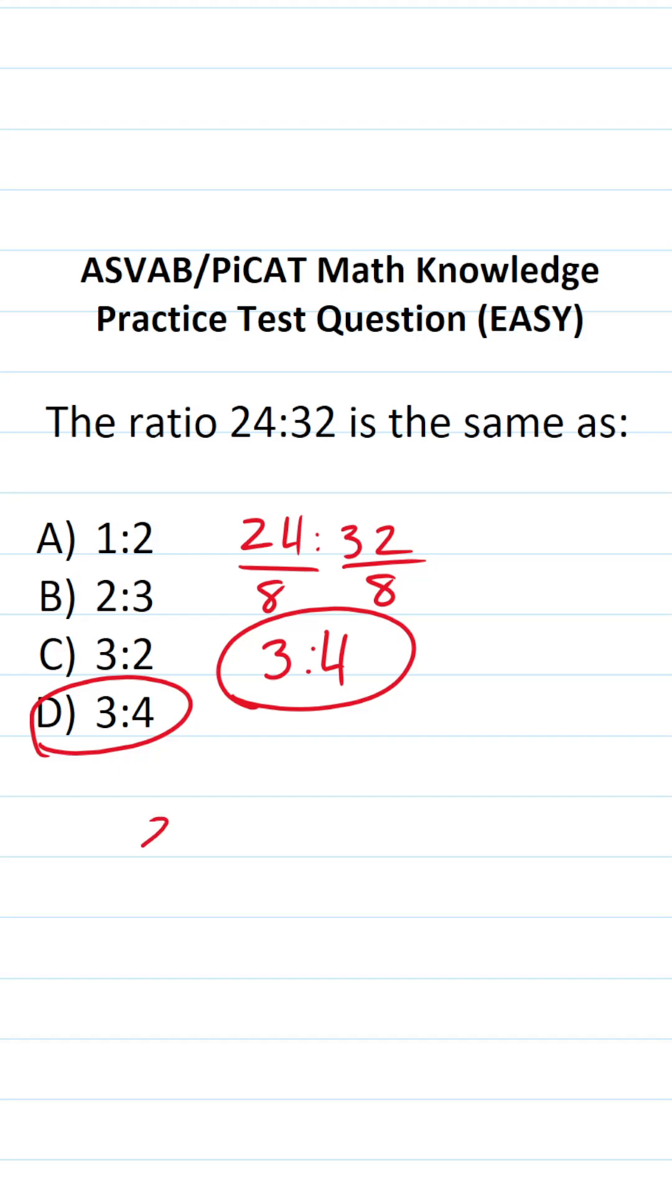Now, if for some reason you couldn't identify the greatest common factor between 24 and 32, you could have listed out the factors of 24, notably 2, 3, 4, 6, 8, 12, and 24.